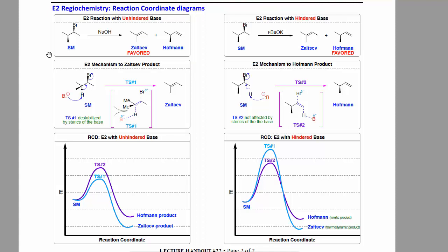Here we have an interesting description of Zaitsev versus Hoffman in the context of reaction coordinate diagrams. And this is from the Pelkey handout. And the idea really is that if you have a single starting material and react with an unhindered base versus a hindered base, you're going to favor different products.